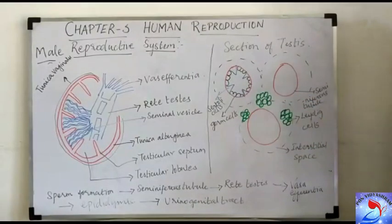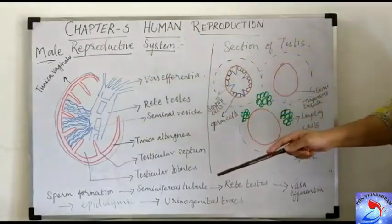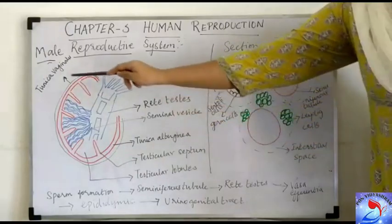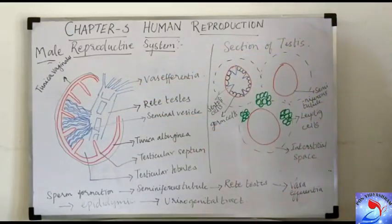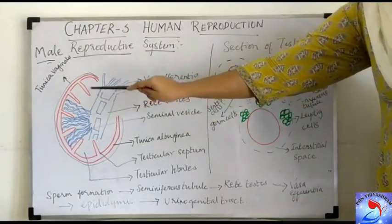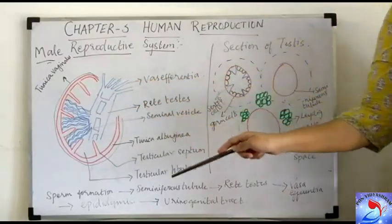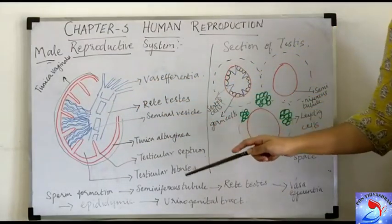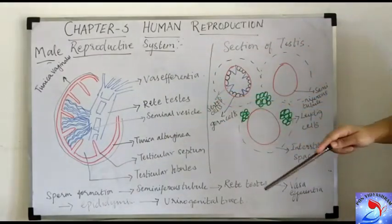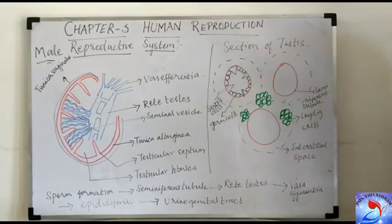Coming to the internal structure of the testis. The testis is surrounded by two layers: the first layer is the tunica albuginea and the second is the tunica vaginalis. The tunica albuginea convolves inwardly, forming inward foldings called septa. This divides the internal structure of the testis into numerous compartments because of the inward folding of the tunica albuginea, which is the fibrous layer surrounding the testis.